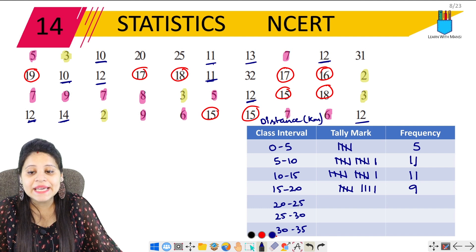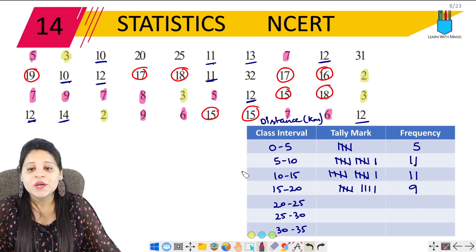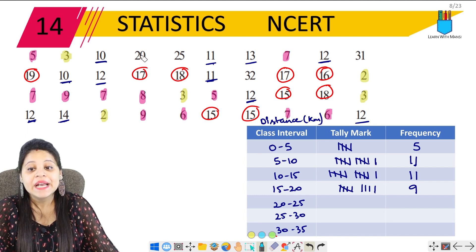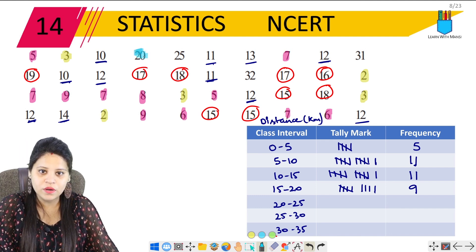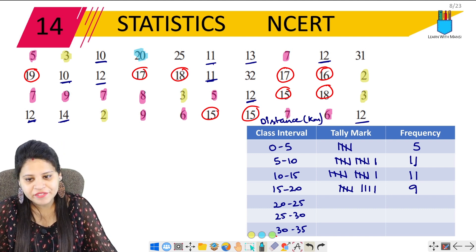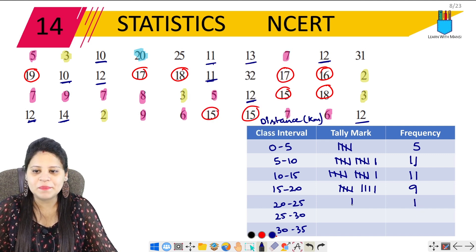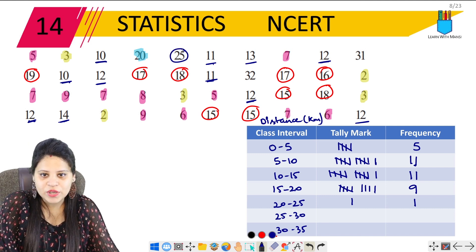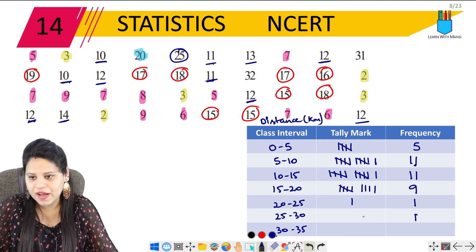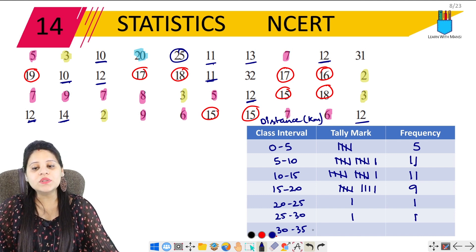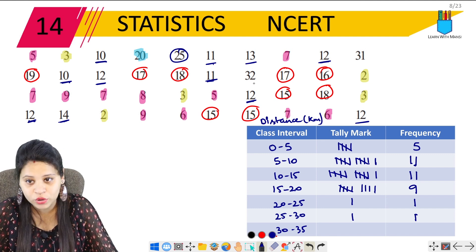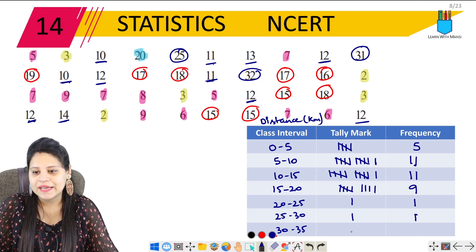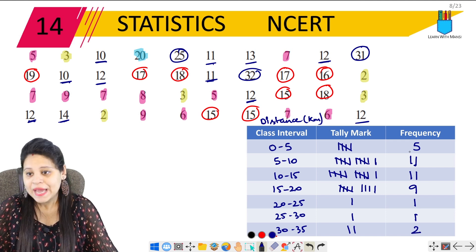Next, 20 to 25 — 20 is included, 25 is not. Looking through the data, there is only 1 value in this range, so the frequency is 1. For 25 to 30 — 25 is included, 30 is not — there is also only 1 value, so frequency is 1. For 30 to 35 — 30 is included, 35 is not — looking at 30, 31, 32, 33, 34: there are 2 values, so the frequency is 2.